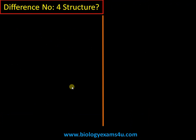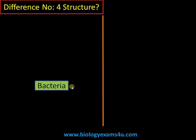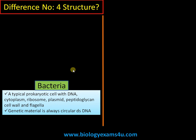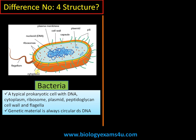Difference number four is regarding structure. Bacteria are typical prokaryotic cells with DNA, cytoplasm, ribosomes, plasmids, a peptidoglycan cell wall, and flagella for locomotion. The genetic material is always circular double-stranded DNA.